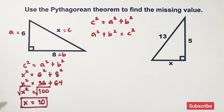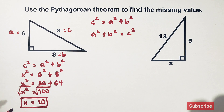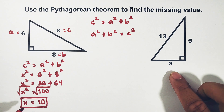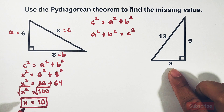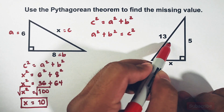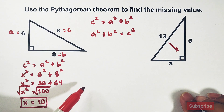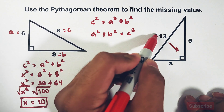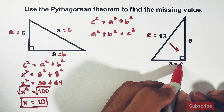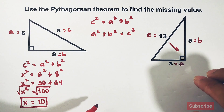Let's move on to item number two. Here, x is not the hypotenuse — it is one of the legs of the right triangle. The value 13 is the hypotenuse because it is opposite the right angle. So 13 represents your letter c, x represents a, and 5 represents b.